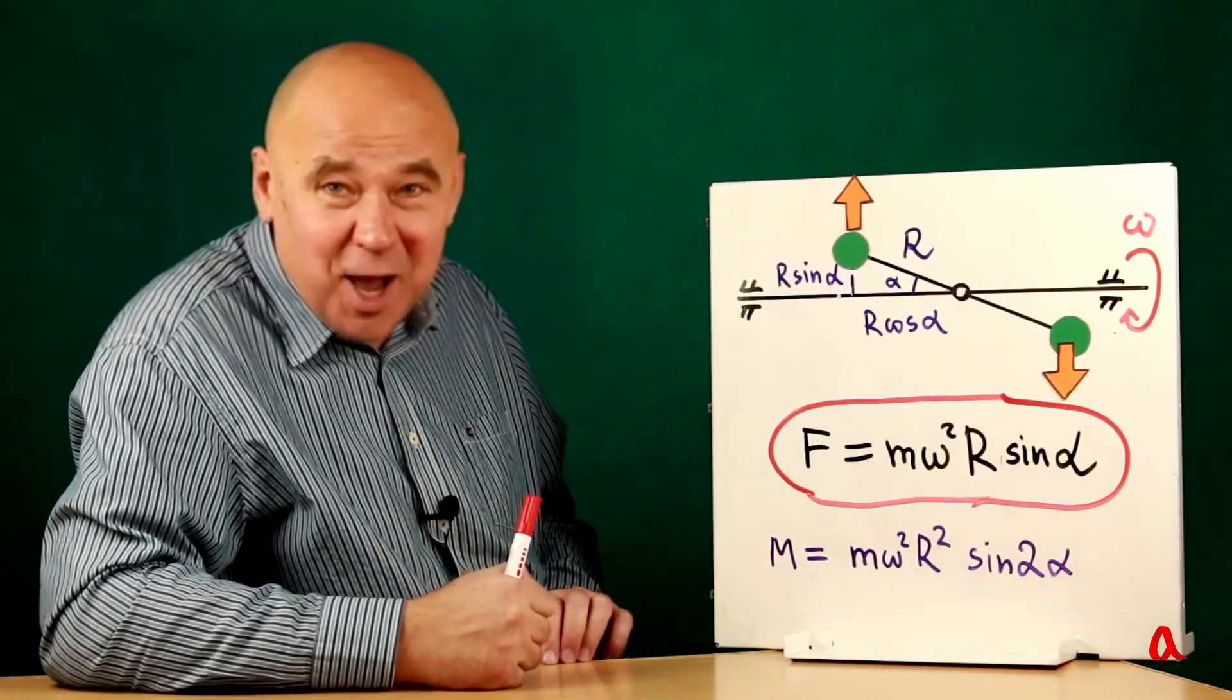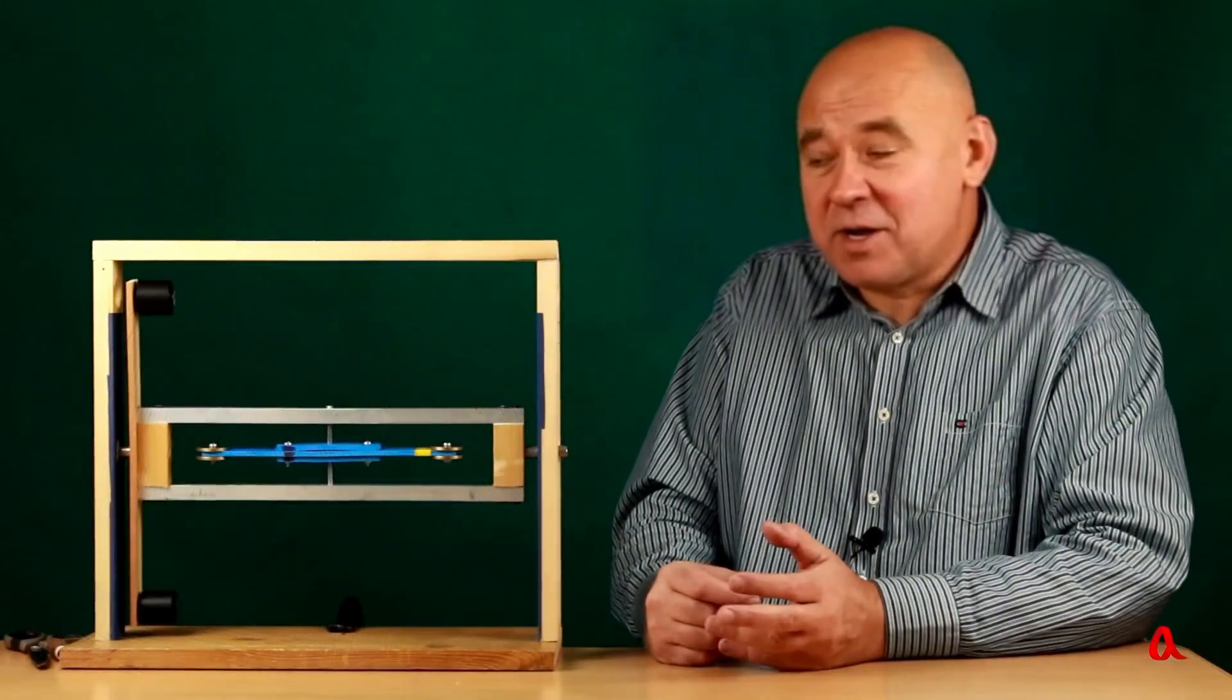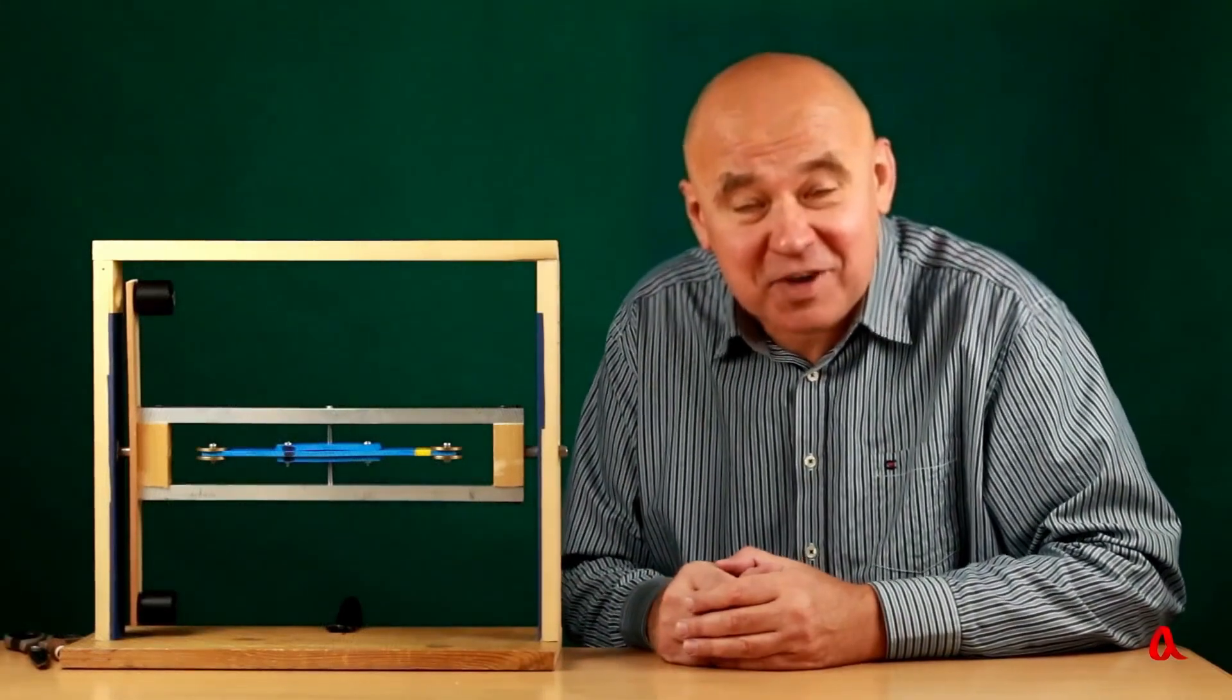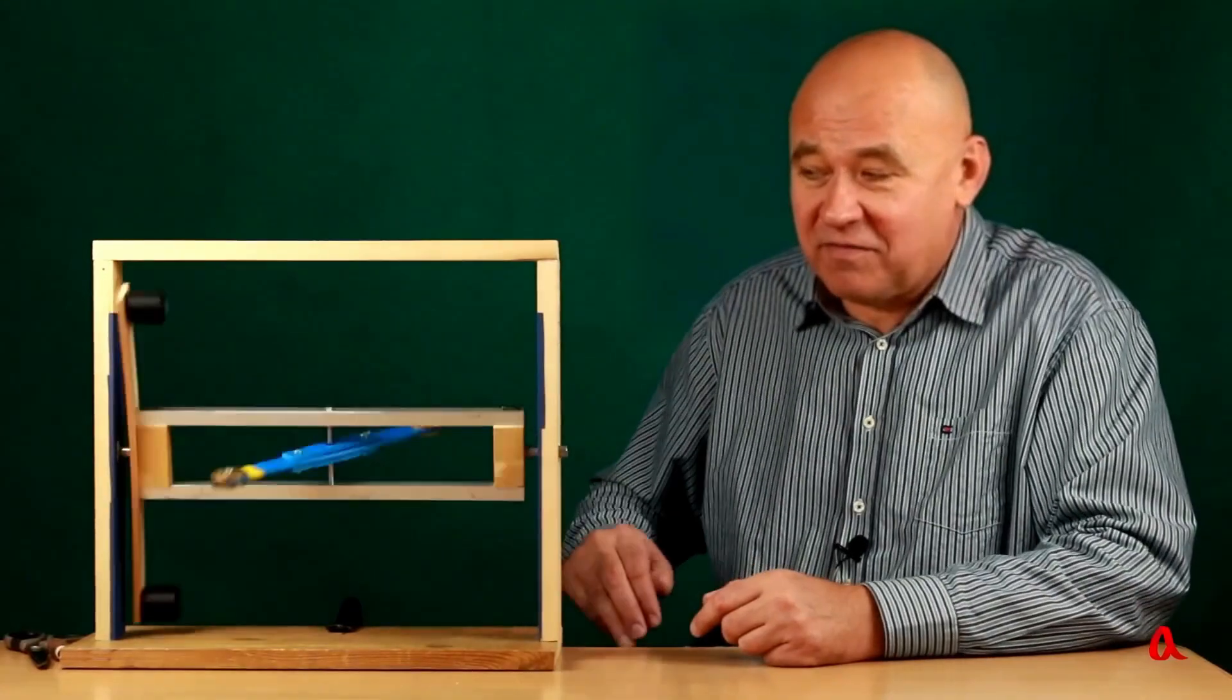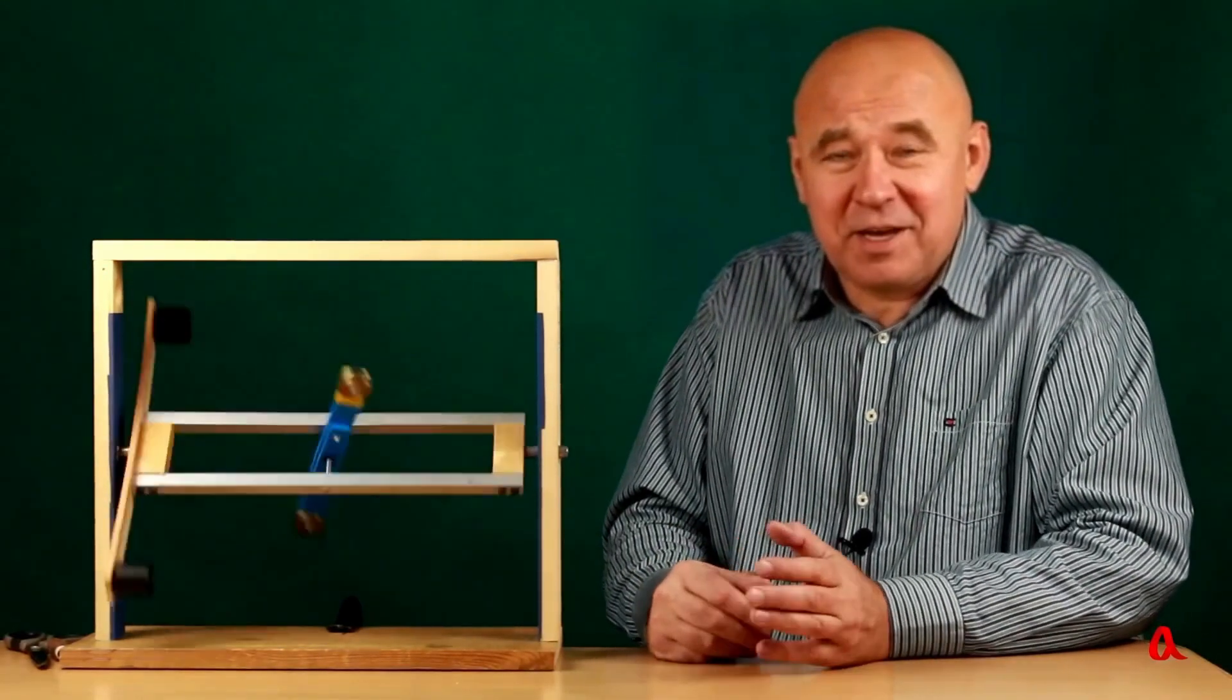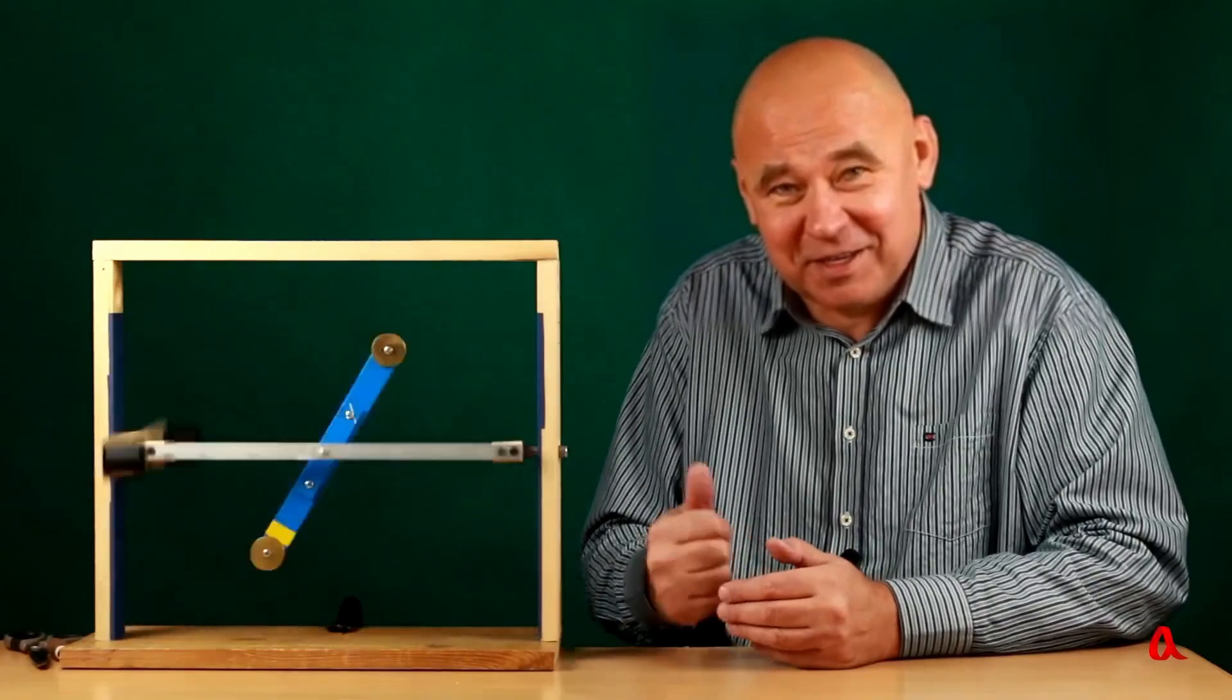Now let's see what happens in a real experiment. I positioned the bar on the axis of the frame as neatly as possible. And now, without delay, let's swiftly move the frame. Well, everything happened too quickly. Maybe we should take a look at what happened here in slow motion.